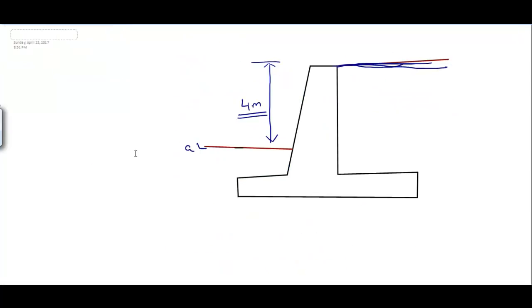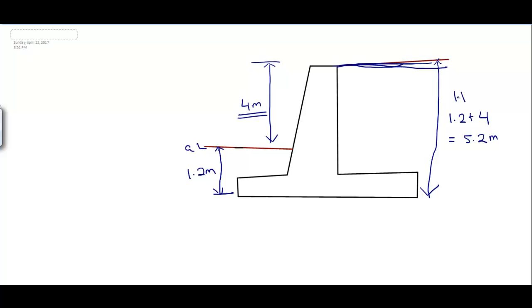From the ground level, the depth of foundation is 1.2 meters. The overall depth of the wall H equals 1.2 + 4 = 5.2 meters. Now we have to proportion various parts of the cantilever retaining wall using thumb rules based on practical experience.